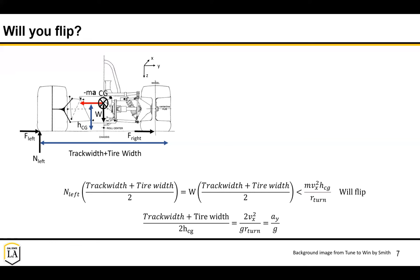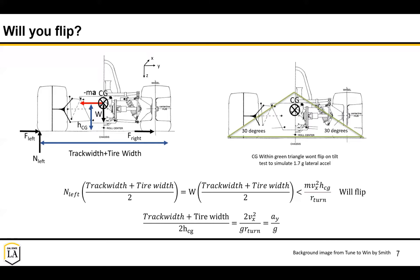You can rearrange this to figure out, for a certain track width, tire width, and CG height, what is your maximum lateral acceleration or velocity to take a turn at a specific radius. This is tested on the tilt test in Formula SAE by inclining the vehicle at 60 degrees. The tangent of 60 degrees equals this ratio of half-track-plus-tire-width over CG height, which works out to about 1.7. So the Formula SAE tilt test is checking that your vehicle can make a turn at 1.7 G's.